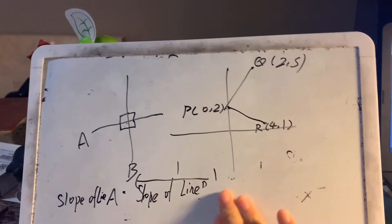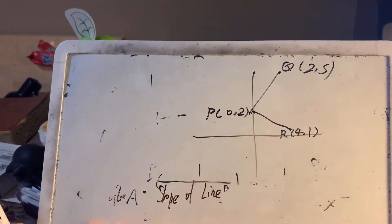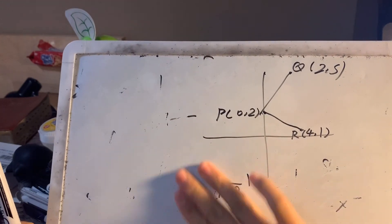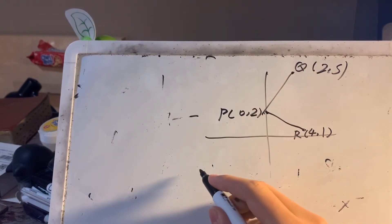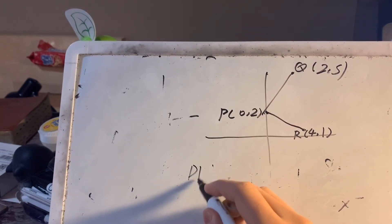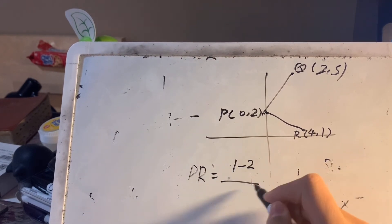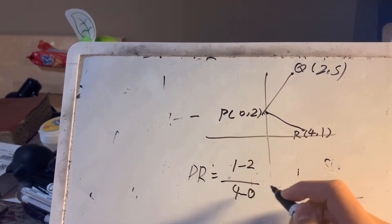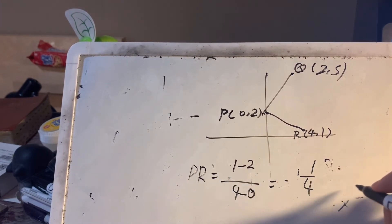So after we get this, we can start doing this great problem. First, we need to determine the slope of PR, which is delta Y divided by delta X, which is equal to negative 1 over 4, which means the slope of PQ is 4.